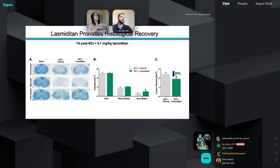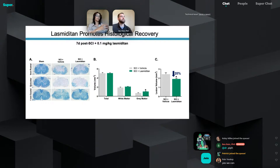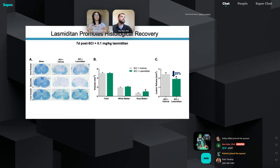It hits the 5-HT1F serotonin receptor, and when it binds to this receptor it induces a pathway that eventually hits the master regulator of mitochondrial biogenesis — PGC1-alpha. When you hit this master regulator, you stimulate all of these mechanisms to promote mitochondrial function. When you promote this mitochondrial function, it stabilizes the neuron and several different cell types. My research showed it also improved the vasculature — after injury there's a lot of compromised vasculature, and restoring vasculature is one of the most important things to do.